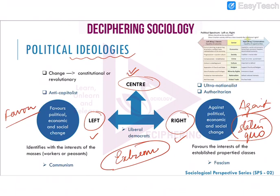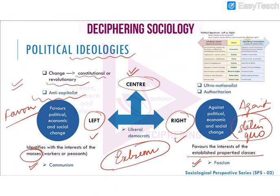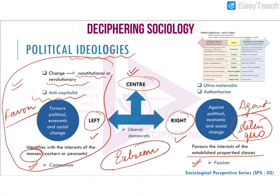The left is mainly against capitalism and identifies with the interests of the masses — workers or peasants. One example is communism. The right favours the interests of the established property classes or the capitalists; they could be fascists. In the left wing, the change they want to bring about could be either through constitutional means or revolutionary means. Today's topic — the Naxalbadi movement — is mostly connected to this left-wing ideology.